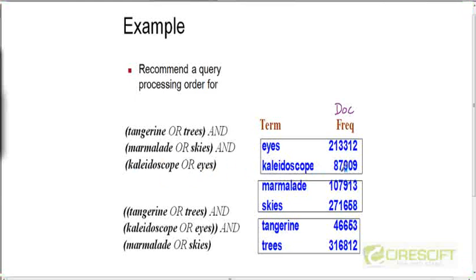So eyes and kaleidoscope are grouped together because we are taking the OR of that. Marmalade and skies have been grouped together in this diagram because those two are together in the OR operation, and tangerine OR trees. So how do you decide which pair of terms to take the AND operation of?